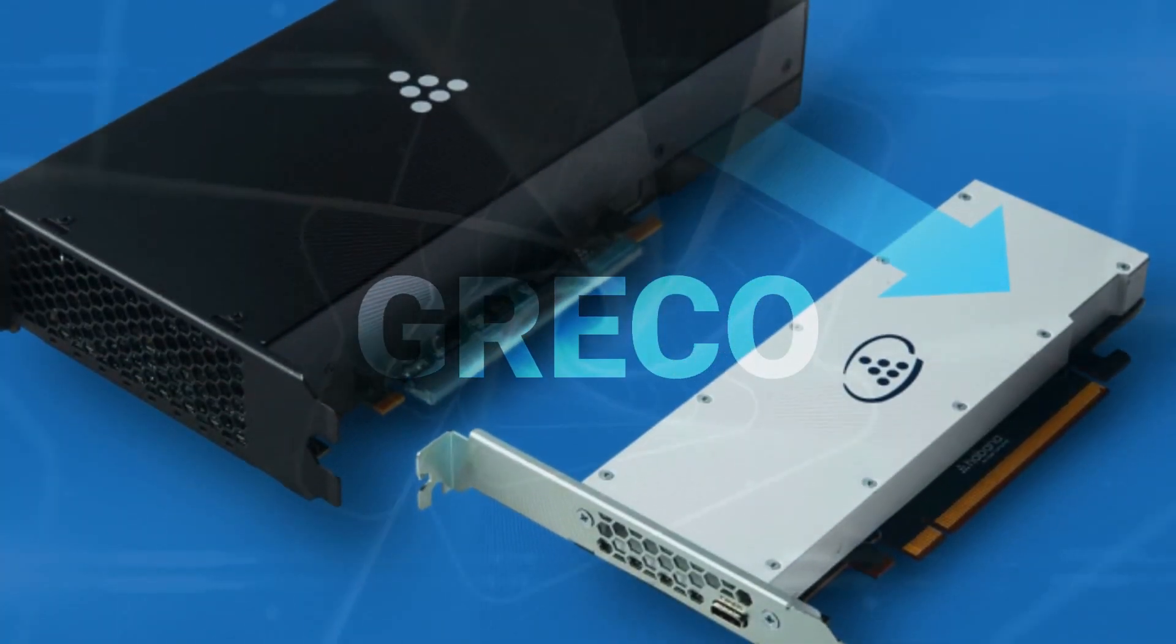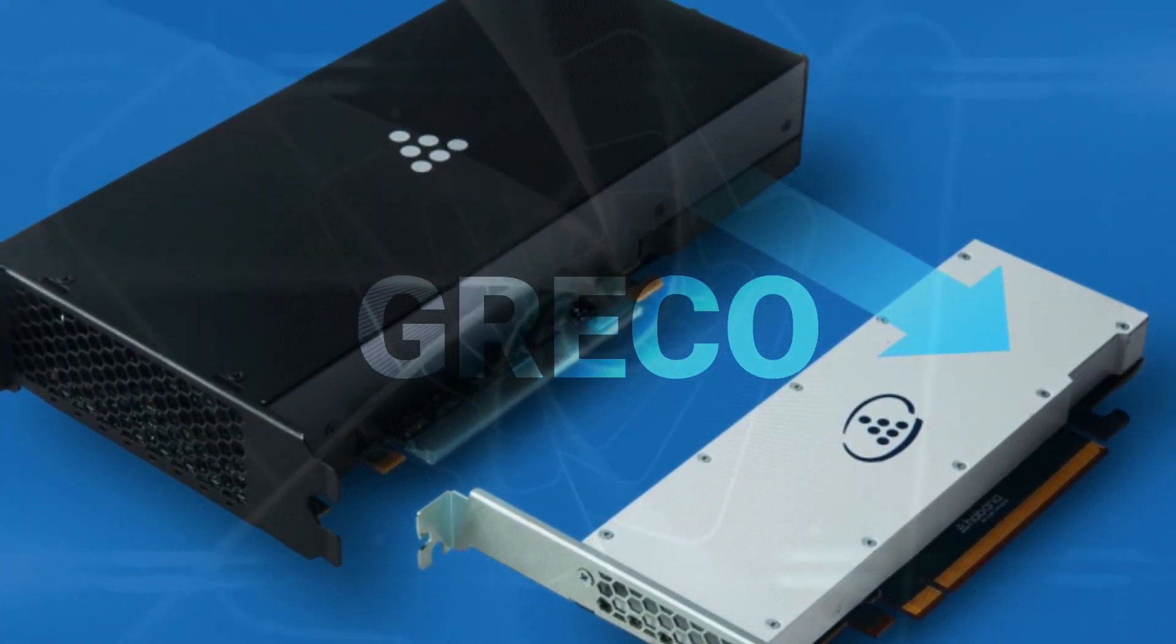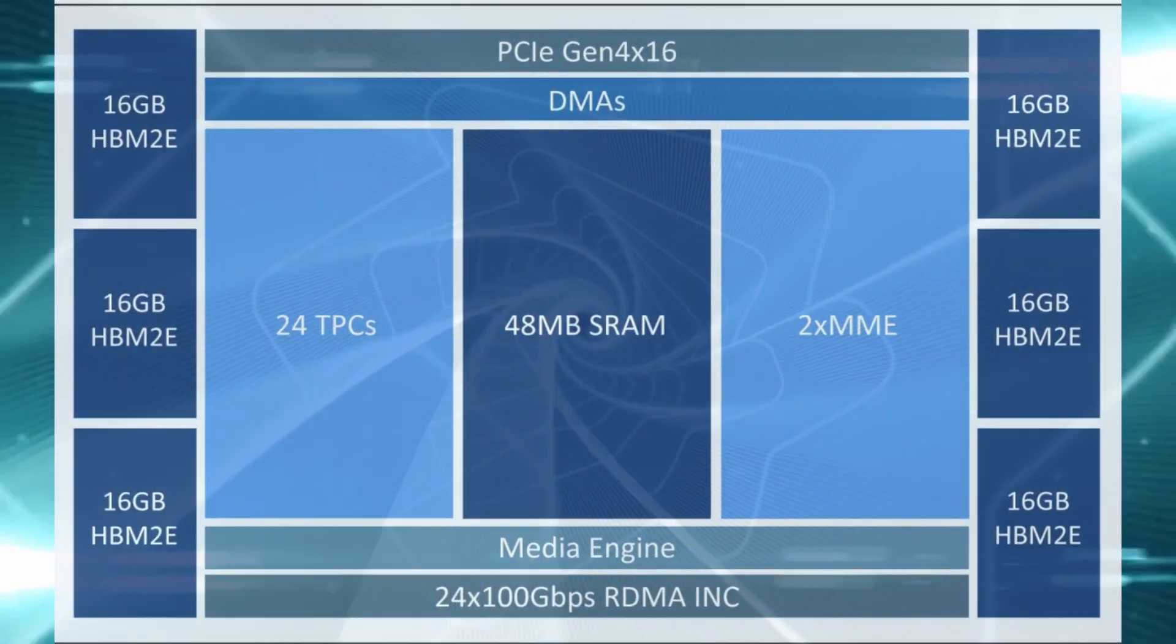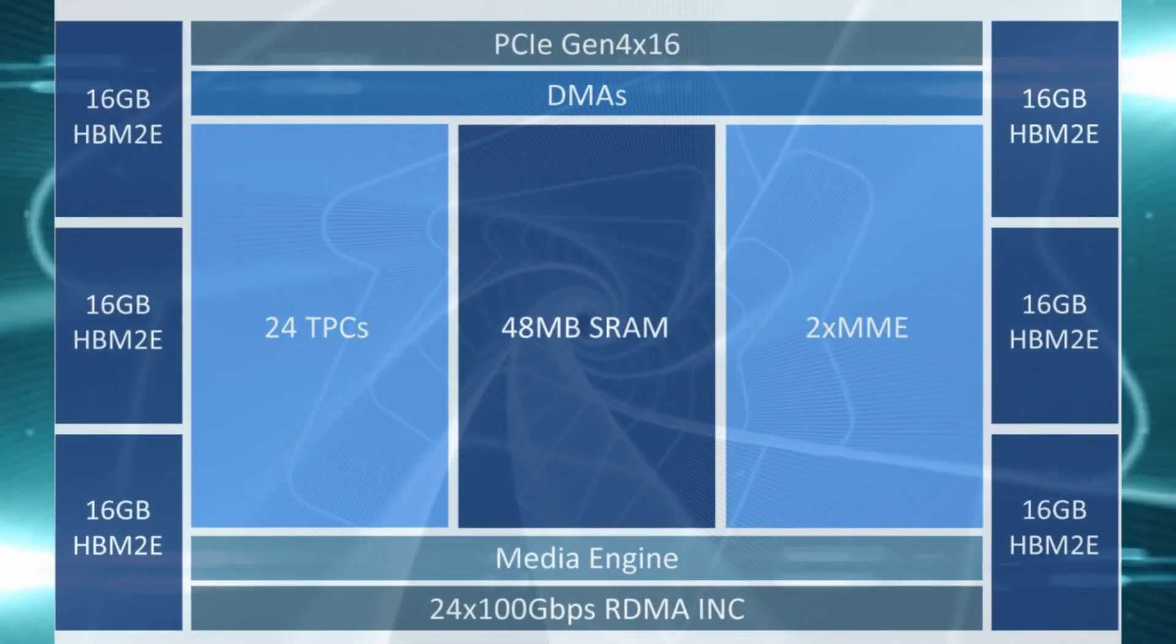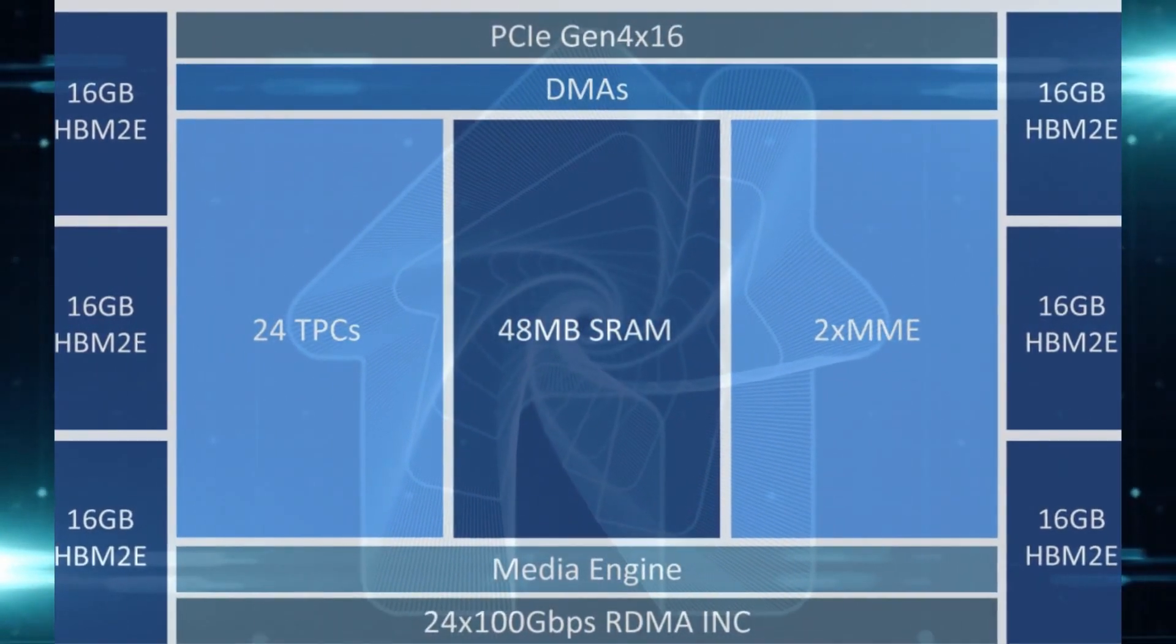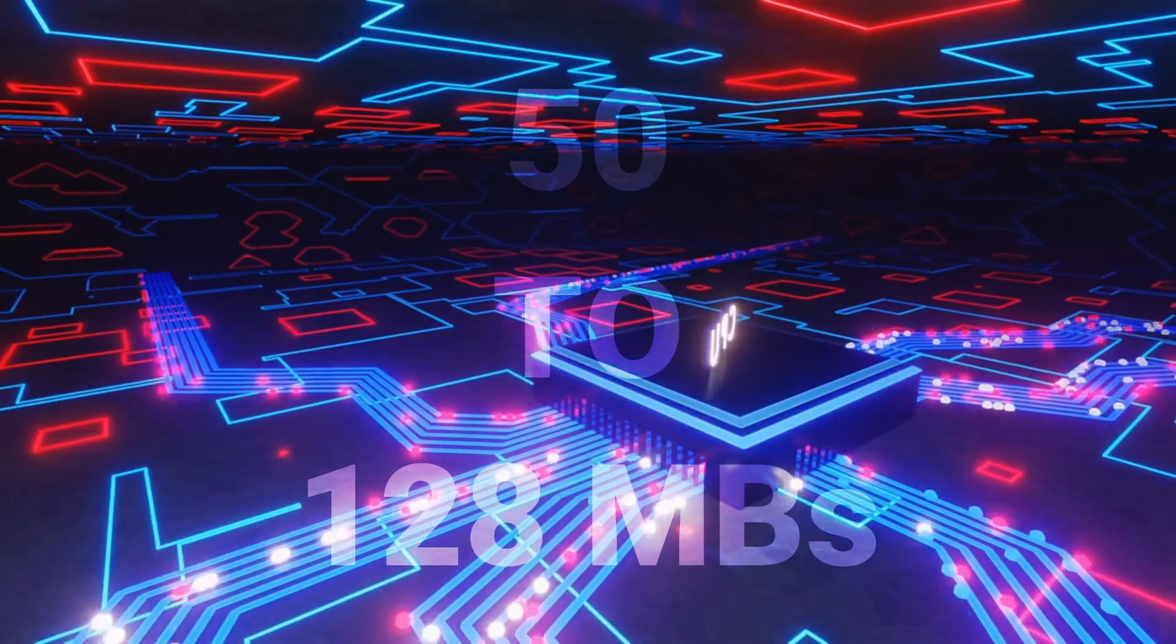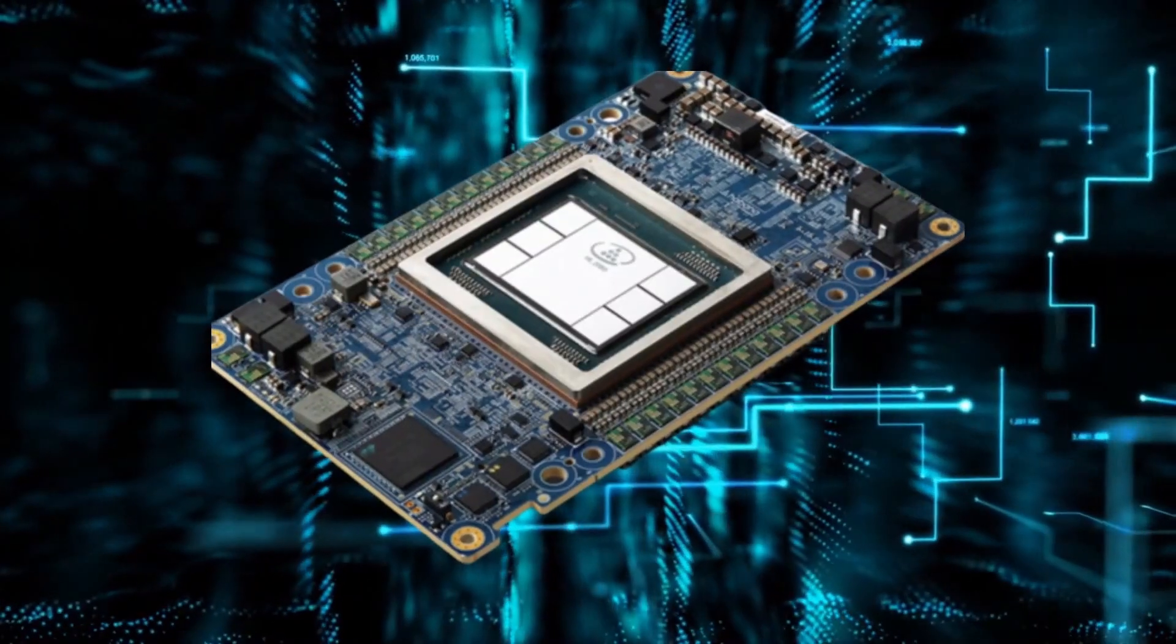Then, there's Greco, the successor to the Goya inference processor. Greco takes the same highly efficient Goya to 7nm, essentially doing the same thing that they've done with Gaudi 2. They've boosted the memory on card from DDR4 to LPDDR5, essentially getting 5 times the bandwidth and also pushing the on-chip memory from 50 to 128MB.